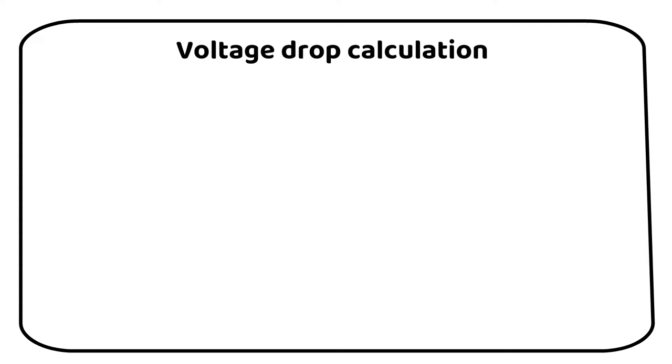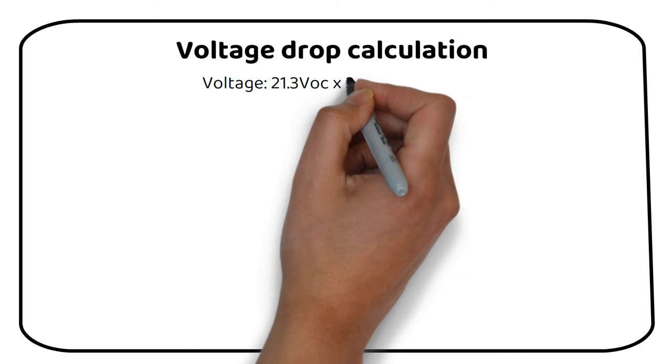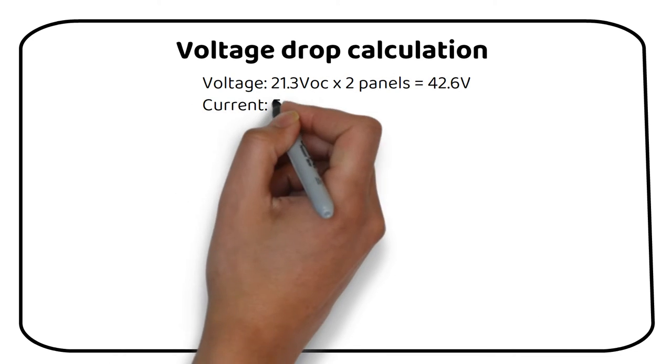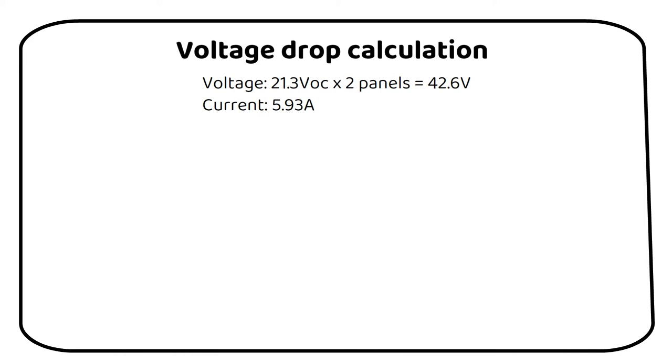We will multiply the open circuit voltage of the solar panel by 2, because we have two panels in series. This adds up the voltage. Check out my video about wiring in series or parallel for more information on why we wire in series. We now become 42.6 volts. The current stays the same at 5.93 amps.